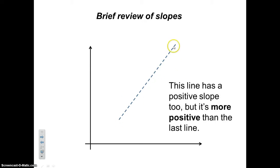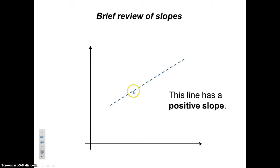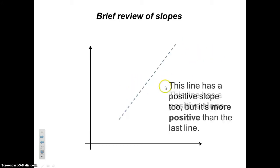Here's another line that has a positive, constant slope, but because it's steeper, we know that it's more positive. So if this is a slope of 5, then this is something bigger, like positive 10.